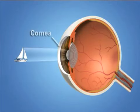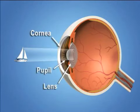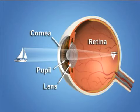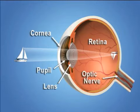Light rays enter the eye through the clear cornea, then through the pupil and the lens. These light rays are focused onto the retina, a light-sensitive tissue lining the back of the eye. Signals from the retina are sent through the optic nerve to the brain, where they are interpreted as the images we see.